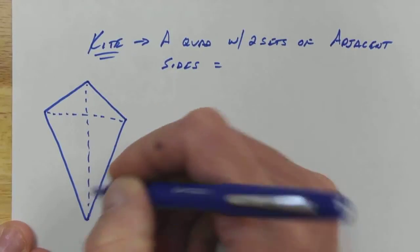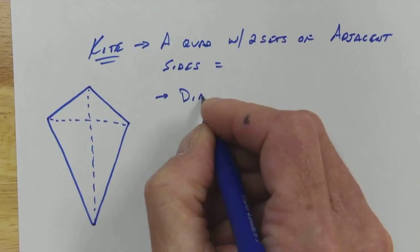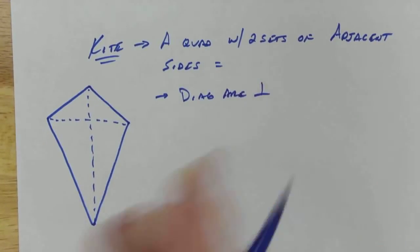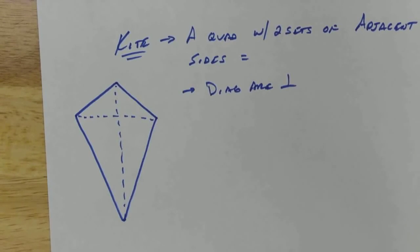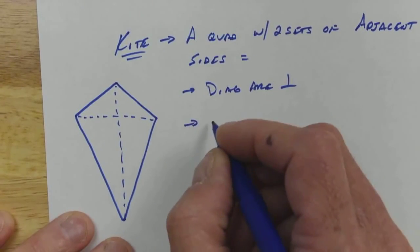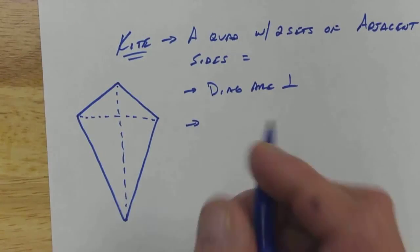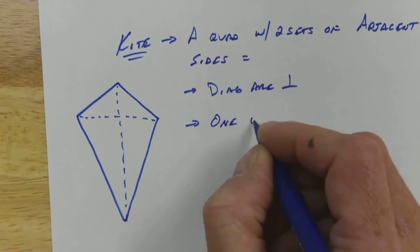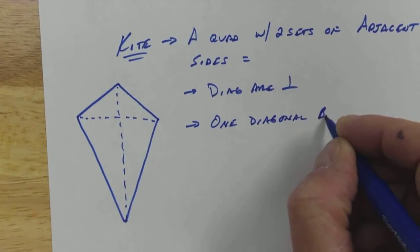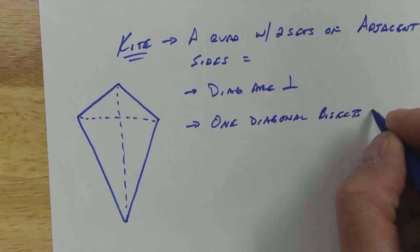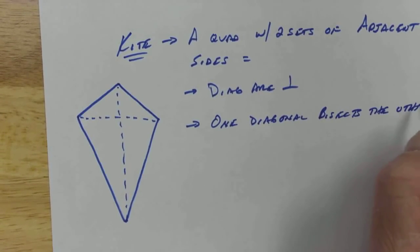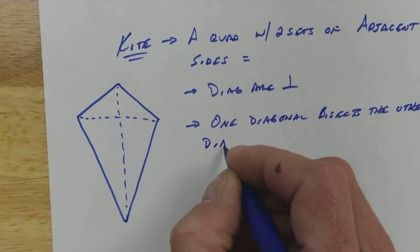The diagonals of a kite do lots of different things. Properties: the diagonals are perpendicular. One diagonal bisects the other diagonal.